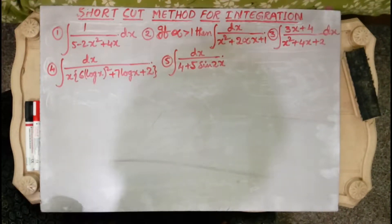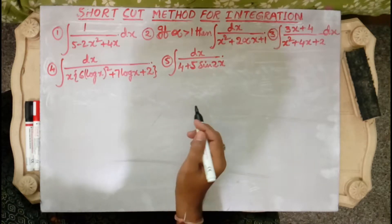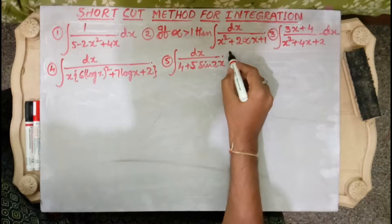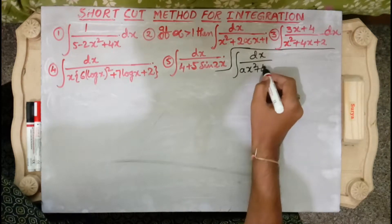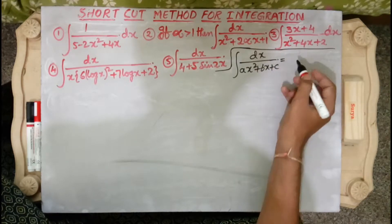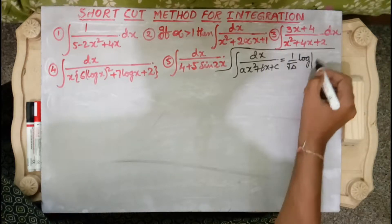Welcome back to my Mathematical YouTube channel. Now I am going to discuss how to solve these types of problems very easily with a single formula. The formula is: integral dx by ax² plus bx plus c equals 1 by root delta times log mod of Q' minus root delta by Q' minus root delta, where this formula is applicable when delta is greater than 0.